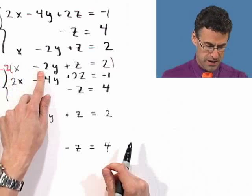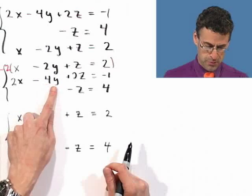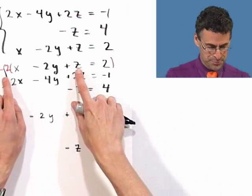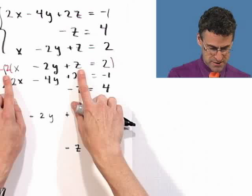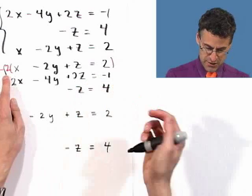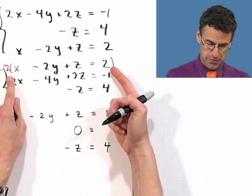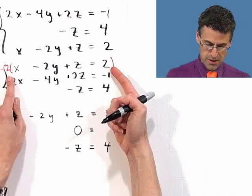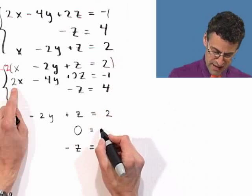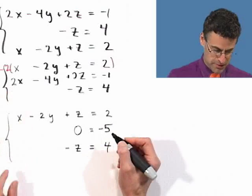Distribute. Negative 2x plus 2x is zero. Great. Negative times a negative is a positive, positive 4y. Positive 4y plus minus 4y is zero as well. This is looking good. You see the conspiracy? And then here I see negative 2z plus 2z is equal to zero. Wow. So everything is zero on this side. And then what do I have on this side? I have negative 2 times 2, which is negative 4. And negative 4 plus negative 1 is negative 5.